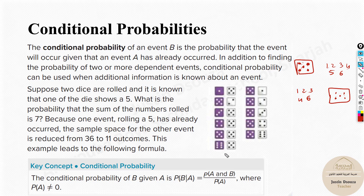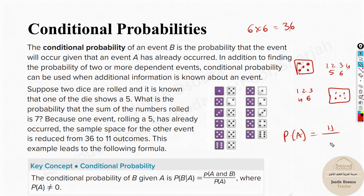The condition is that a die shows a five. So P(A) — the probability that a die shows a five — is eleven out of the total possibilities when rolling two dice. The sample space for two dice is six times six, which is 36. So P(A) = 11/36.